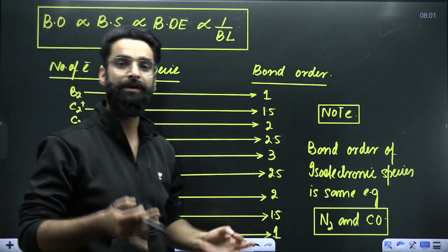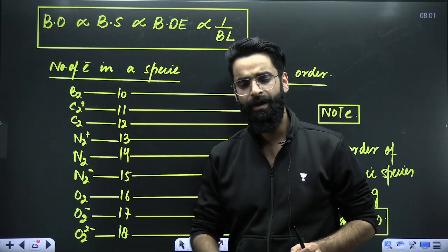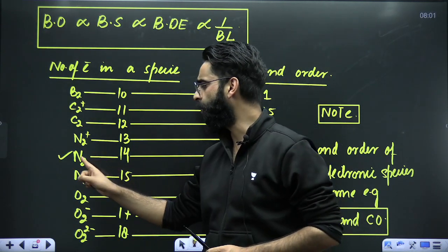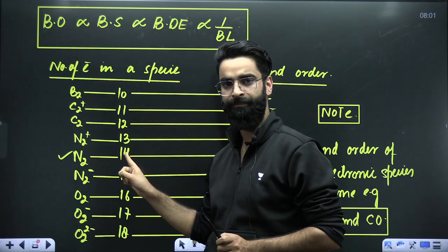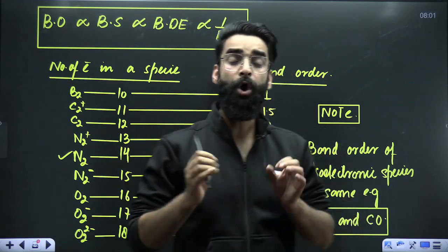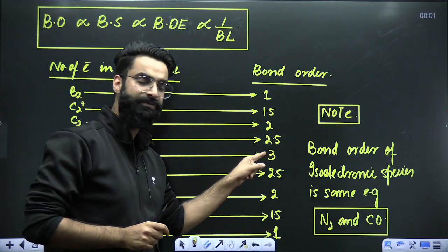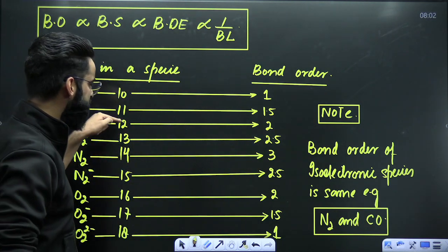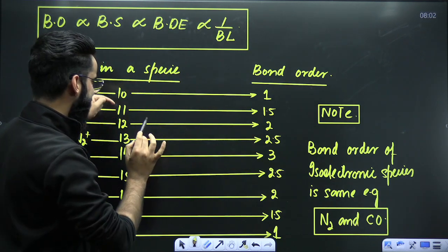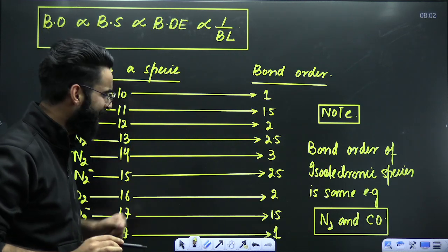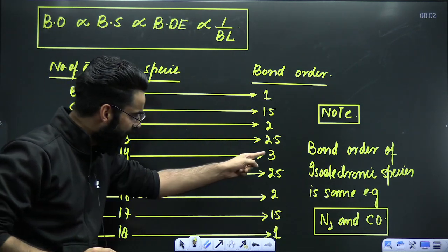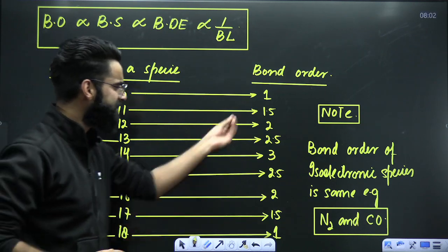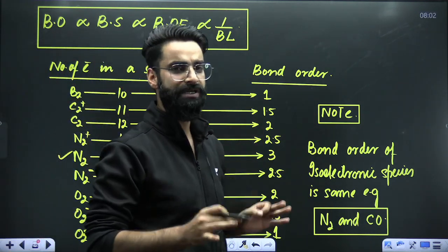Have a look at the trick through which you can solve these sorts of questions. Whatever species you are given — for example N2 — you just have to calculate the total number of electrons, which comes out to be 14. N2 is a 14-electron species and all 14-electron species always have a bond order of 3. For a 13-electron species, reduce by 0.5 — it becomes 2.5. A 12-electron species becomes 2. An 11-electron species becomes 1.5. Similarly, a 15-electron species has bond order 2.5, and a 16-electron species has bond order 2.